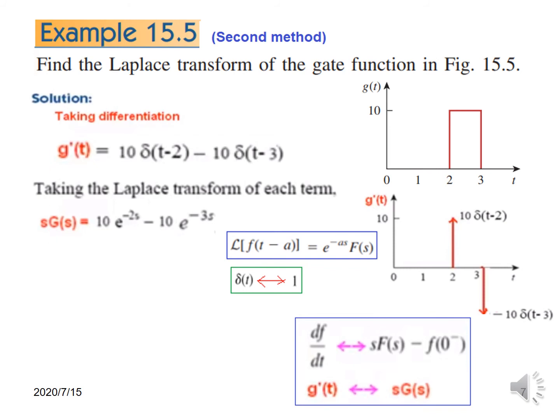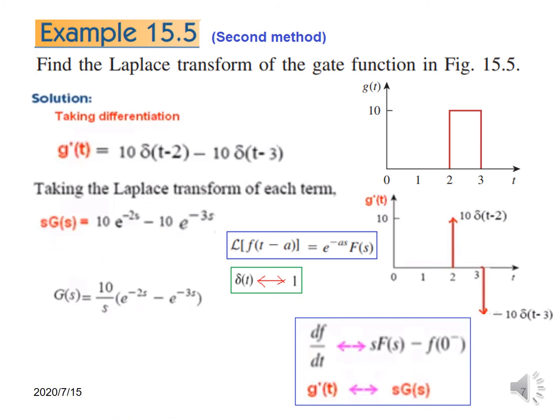Taking the Laplace: g'(t) becomes S·G(s). Then 10 delta(t minus 2) gives e to the minus 2s multiplied by 1. The shifting is by 2, so e to the minus 2s and F(s) is 1. Similarly, the second term gives minus 10 e raised to the power minus 3s. We need to find G(s), so we divide by S. G(s) is 10 over S times these terms. This is the same answer we got in the previous method.